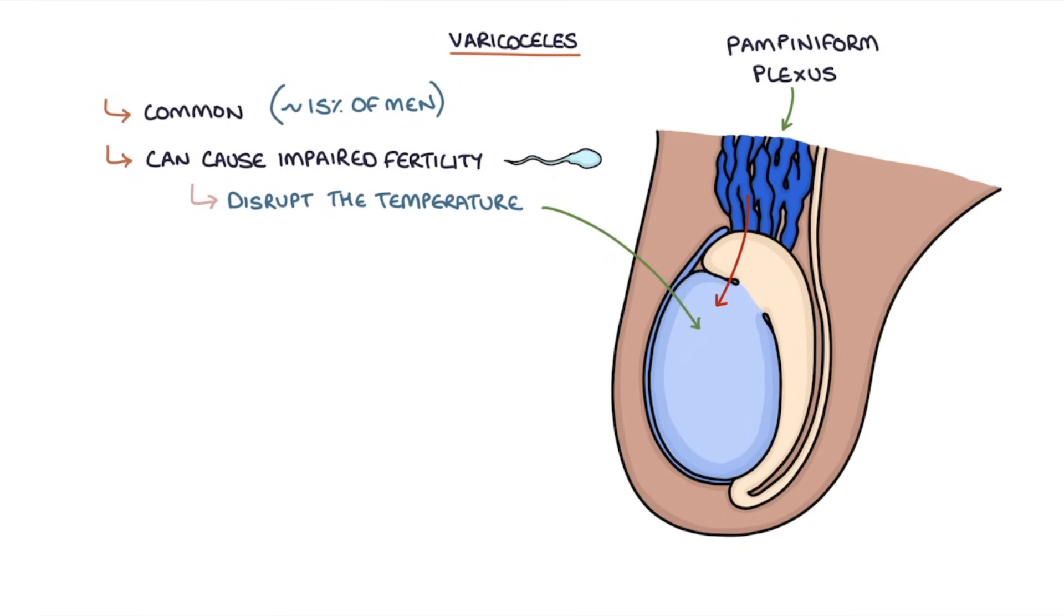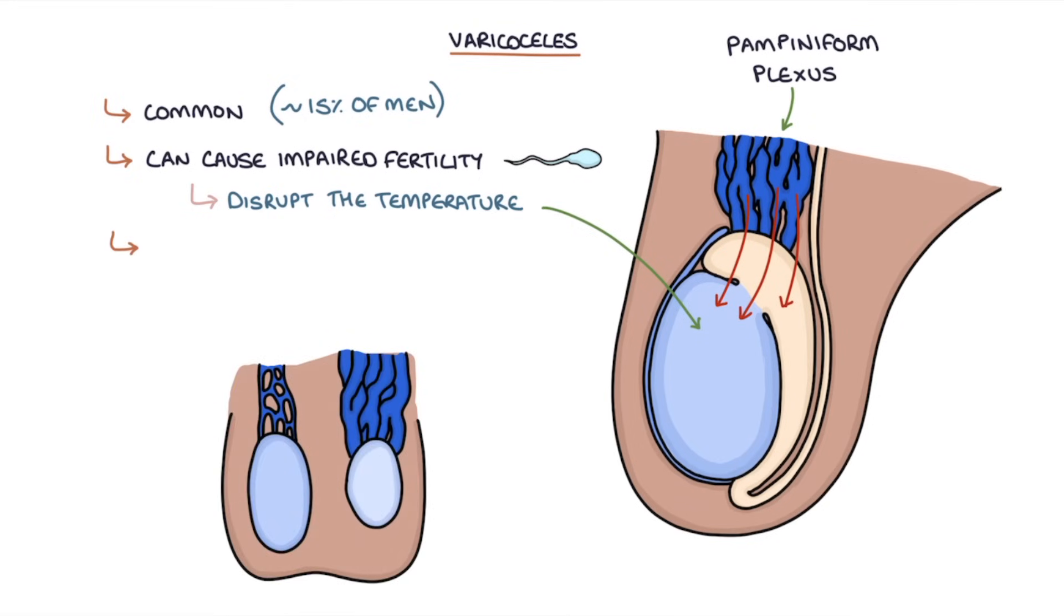All that blood collecting above the testicle increases the temperature, which can result in reduced fertility. Varicoceles may also result in testicular atrophy, reducing the size and function of the testicle.